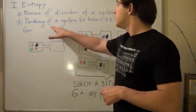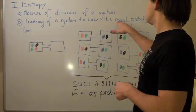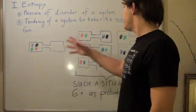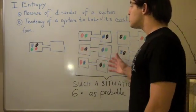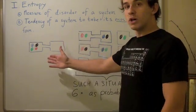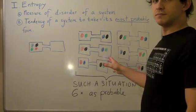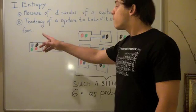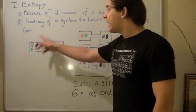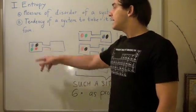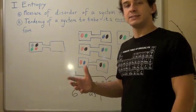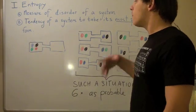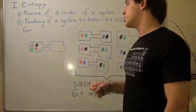Entropy is the tendency of a system to take its most probable form. So in the system we have here, what's the most probable form? Well, it's clear that it must be this one — the evenly split arrangement. Now, you can imagine this is only with four molecules. You can imagine how unlikely the all-on-one-side arrangement becomes when we get millions and billions of different molecules. This even split becomes much more likely with a greater number of molecules.